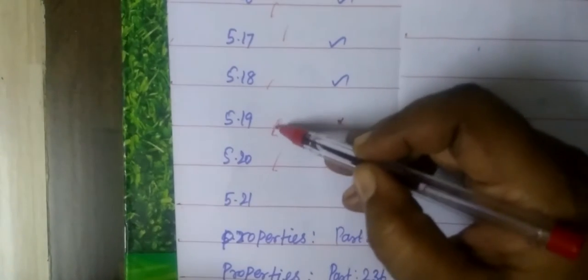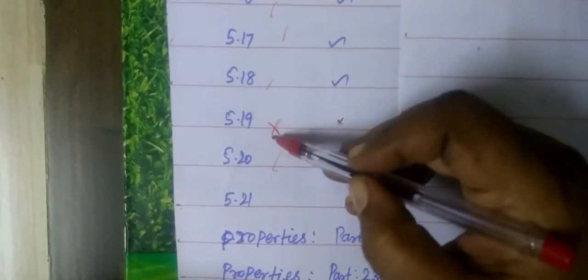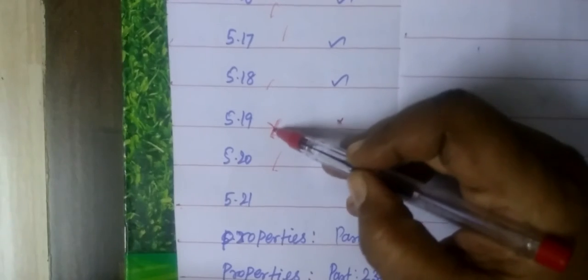Next is 5.10. So 5.10, 11, 12, 13, 14. In this case, part number is just some order number. Then 5.15, 16, 17, 18, 19. Then 5.20 — 5.19 is not included. So it is not that. This is what we will see.